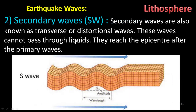Secondary waves are also known as transverse or distortional waves. These waves cannot pass through liquids. They reach the epicenter after the primary waves. They can pass through only gaseous as well as solid materials, but they cannot pass through liquid.